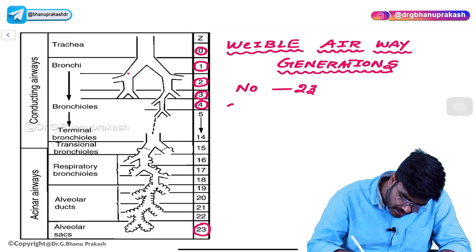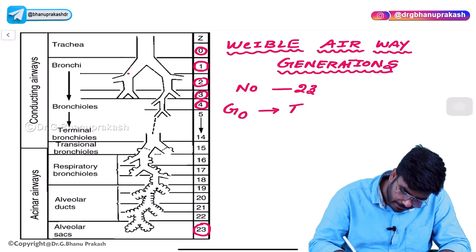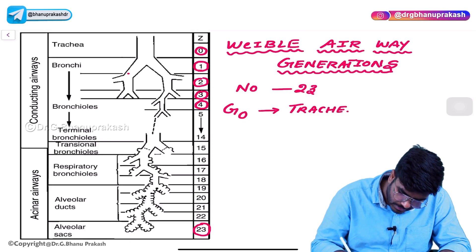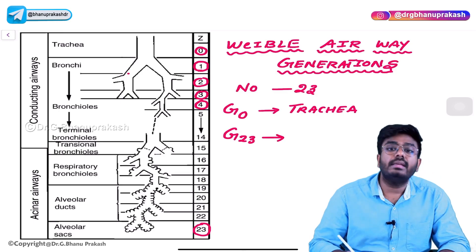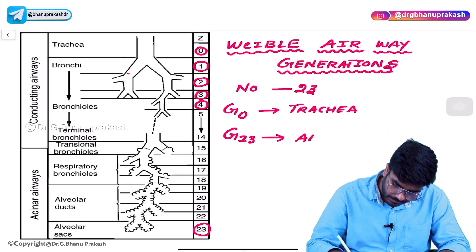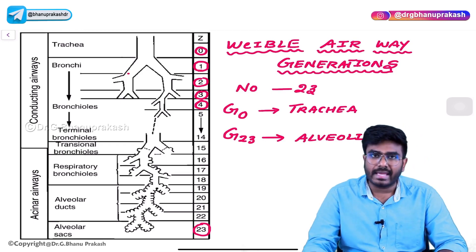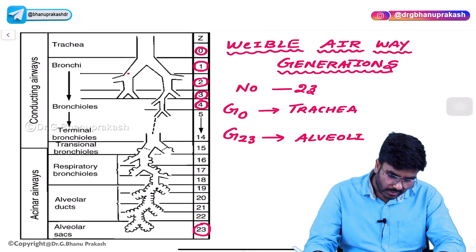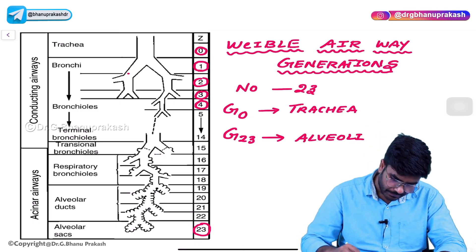Generation 0 is the trachea, and the last generation — generation 23 — is alveoli, or alveolar sacs. Now what are the important points you need to know for your exam?